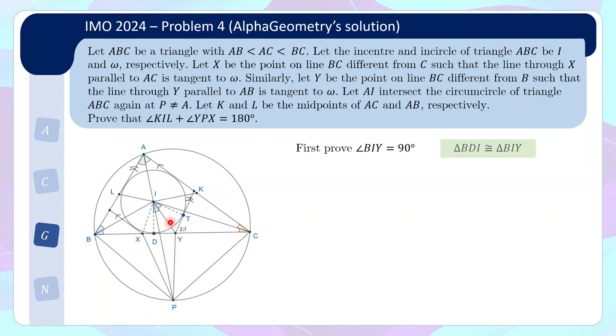So from here, we actually get a pair of similar triangles, which is that triangle BDI is similar to BIY. Well, this is because the angle B is shared and then you have a right angle at D and right angle at I. Okay, so this is actually the first of 5 pairs of similar triangles that the AI will be using. So it is quite a bit of a journey.